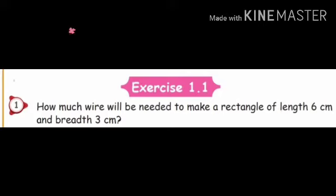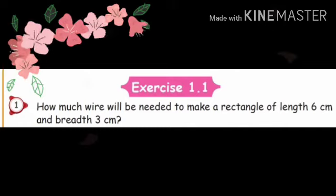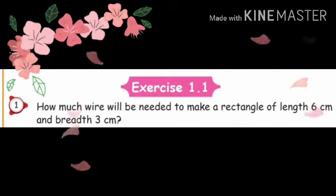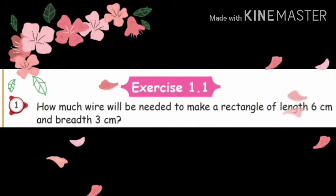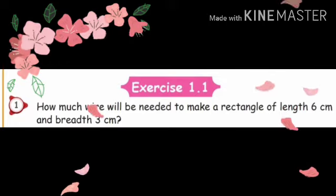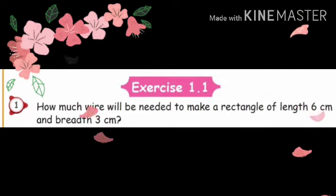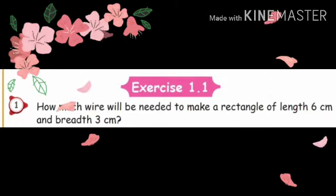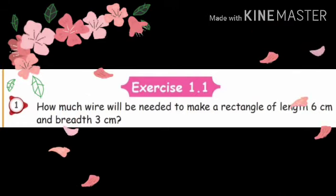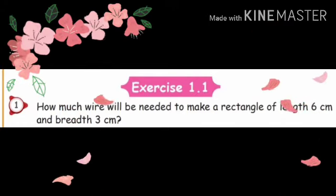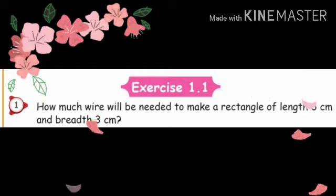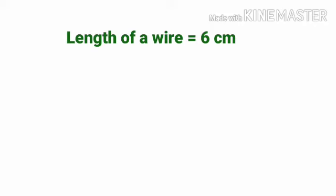Using these two formulas, let's solve the full exercise. Exercise 1.1, first one: How much wire will be needed to make a rectangle of length 6 cm and breadth 3 cm? That is, to make a rectangle shape with 6 cm length and 3 cm breadth, how many square cm of wire is needed?